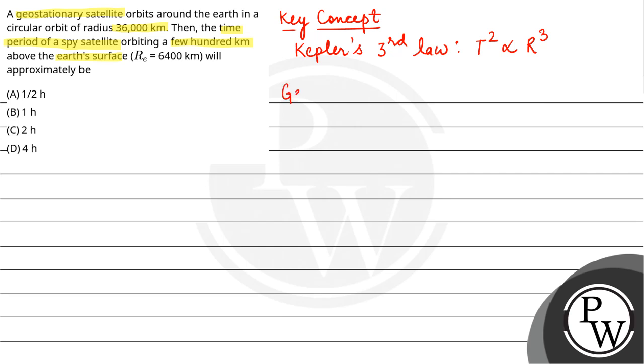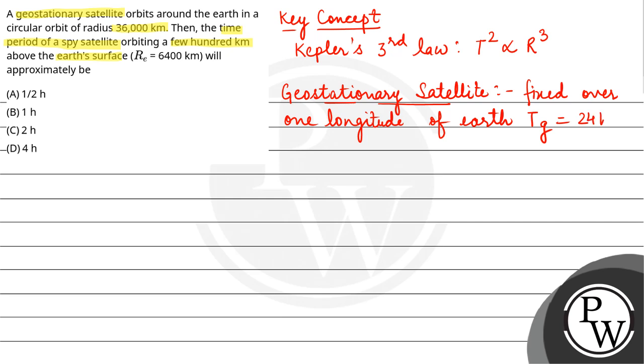Another concept is the geostationary satellite. Geostationary satellites are those satellites which are fixed over one longitude of earth. And if we talk about time period, that will be 24 hours.